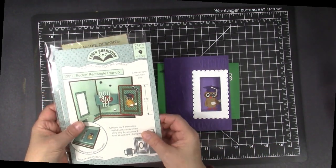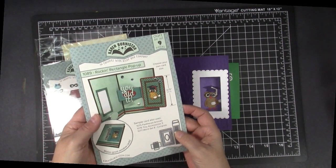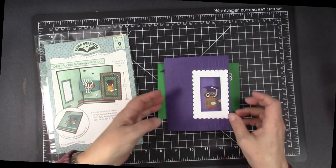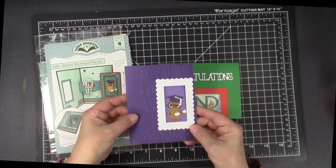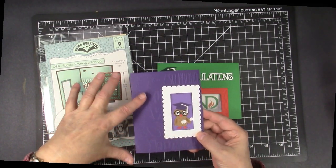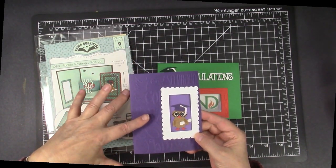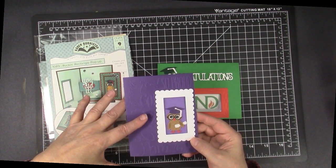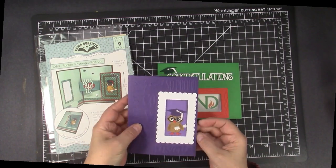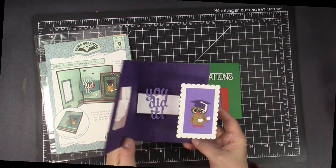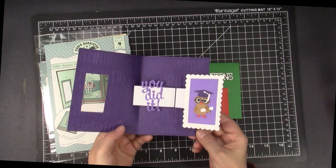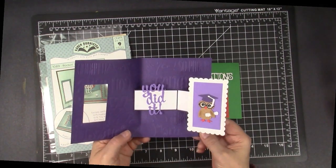This is the Rockin' Rectangle Pop-Up Die Set, and I'm going to show you how to make a card with that. The first graduation card I did was this one, and I used an old embossing folder on the front. It's from Cuddlebug, and when you open it up, the rectangle pops up, and it's a very cool, interactive motion.